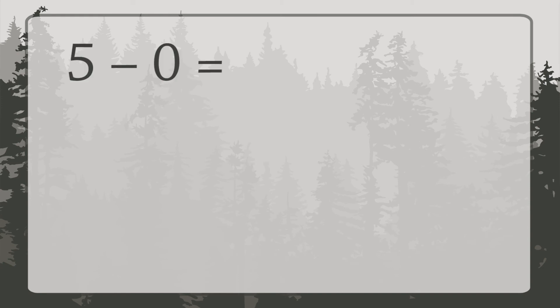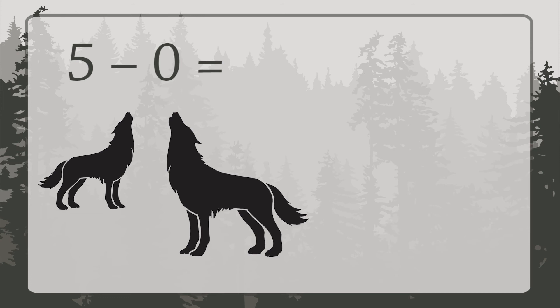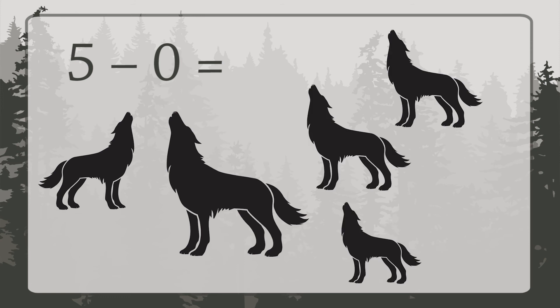Let's do one more. What's five minus zero? Well, if you start with five things and take none of them away, you still have five things. So five minus zero equals five.